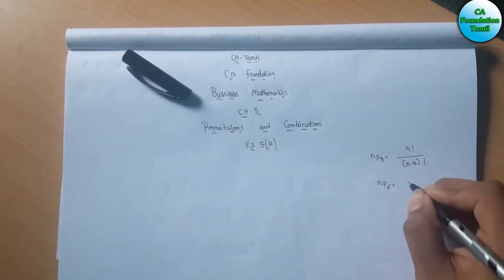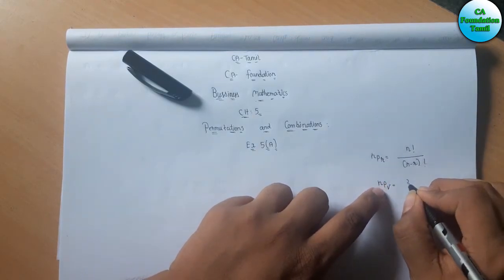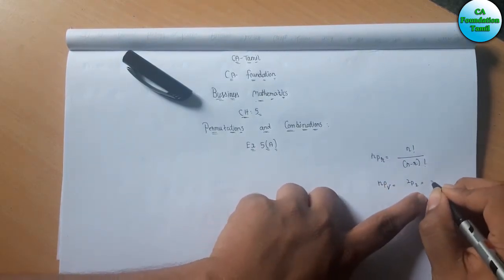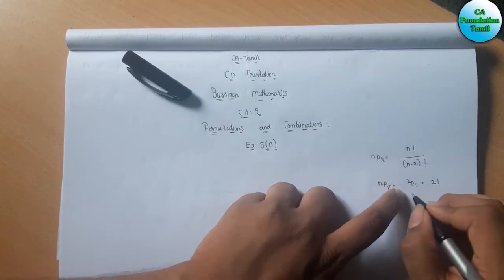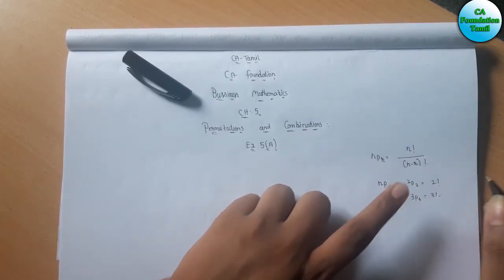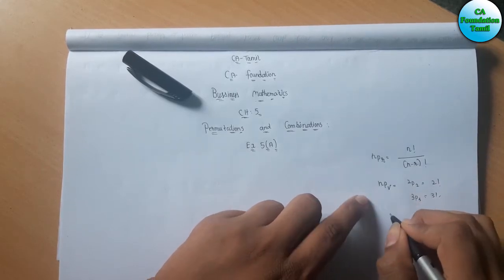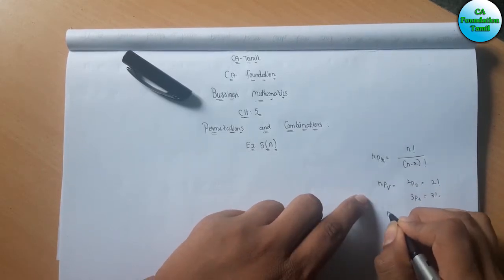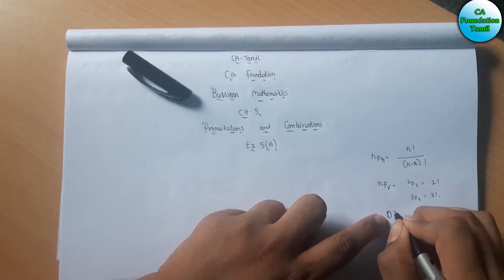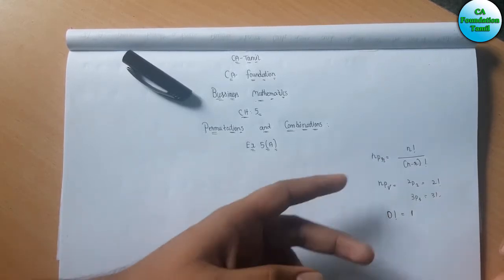NPR — when N equals R, it is the same number. For example, 2P2 equals 2 factorial, and 3P3 equals 3 factorial. When the factorial value is 0, that means 0 factorial equals 1. This is a common term to remember.